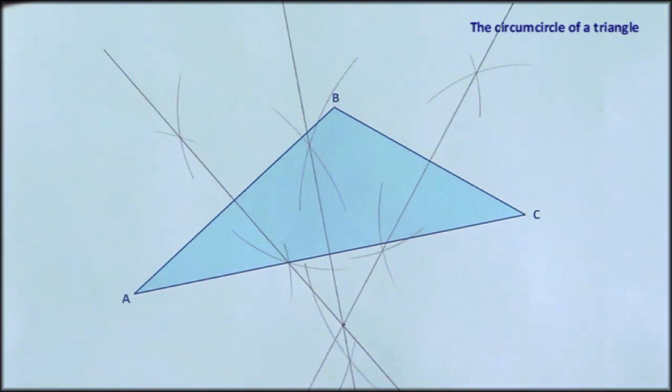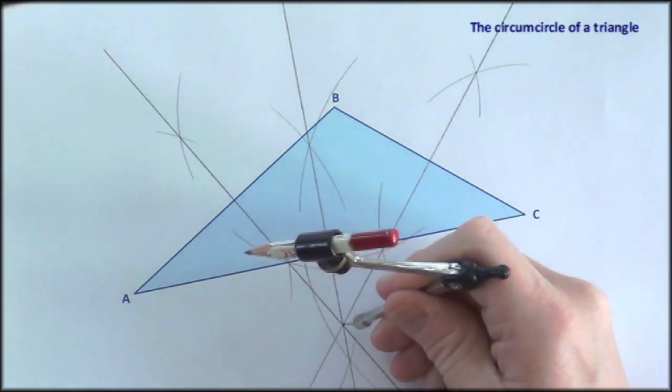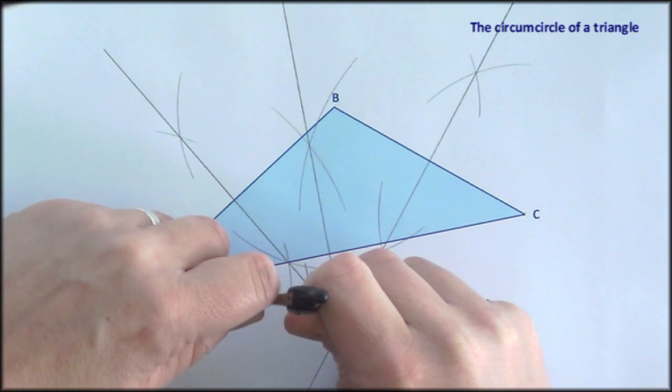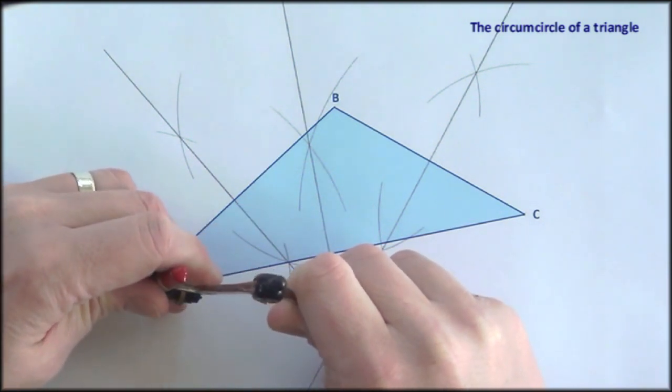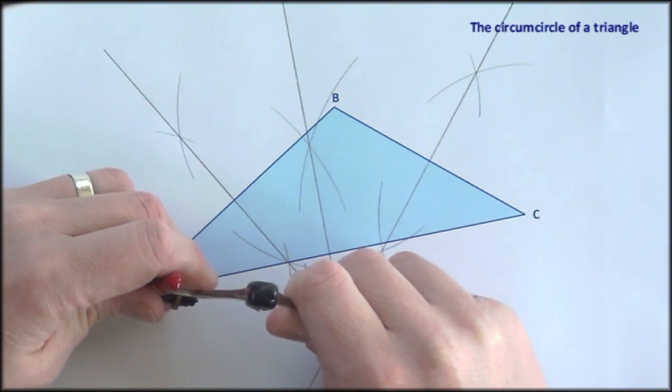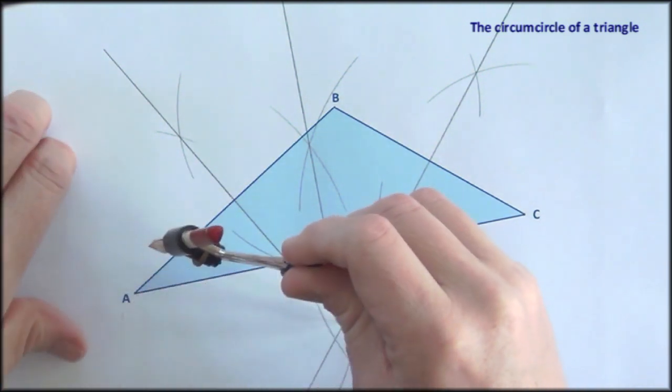Now I just need to hope that my compass will stretch wide enough to draw the circle. So I'll put the point on the circumcentre and then draw out the compass so that it sits on one of the vertices. It doesn't matter which one you pick because it's supposed to go through all of them.